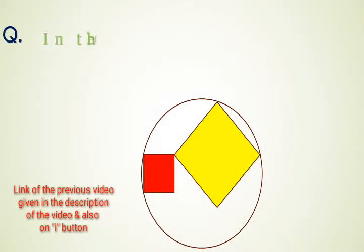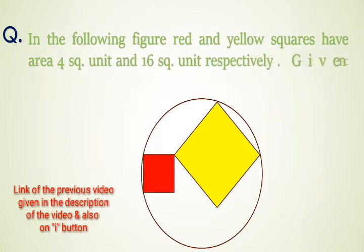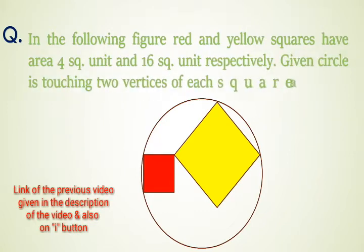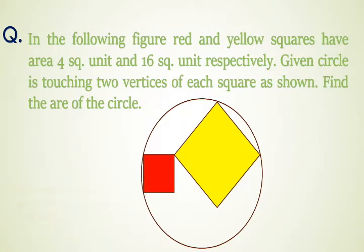Here is our previous question. In the following figure, red and yellow squares have area 4 square units and 16 square units respectively. Given circle is touching 2 vertices of each square as shown. Find the area of the circle.